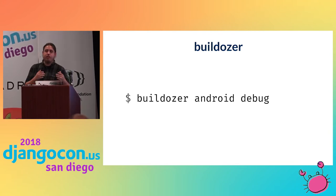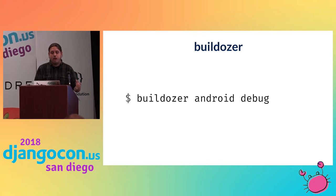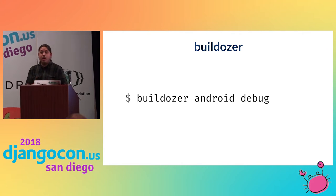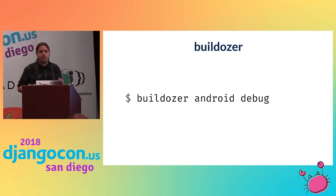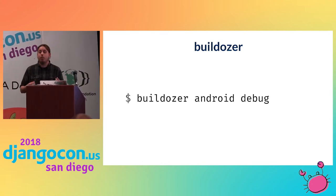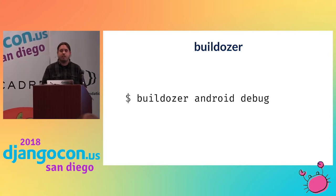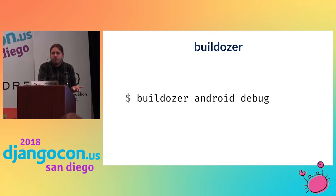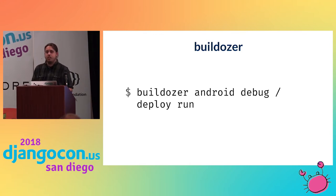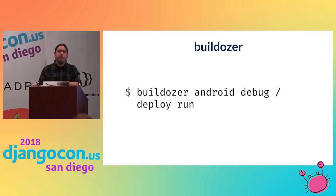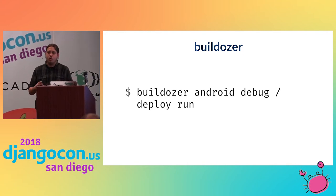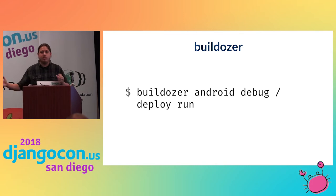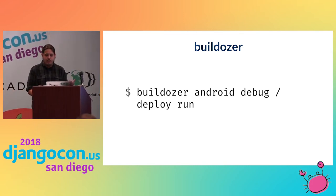When you run 'buildozer android debug', it automatically downloads and installs the Android SDK, Android NDK, and python-for-android if you haven't already. It takes a while the first time, but subsequent builds are faster. This command packages your APK into a bin directory. Add 'deploy run' to the command and Buildozer uses ADB to put the APK on your device and open it — one command to build your entire app, deploy it to your phone, and launch it.